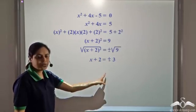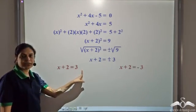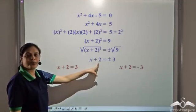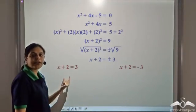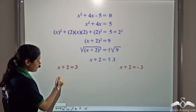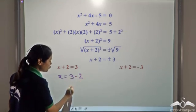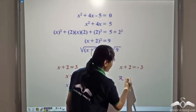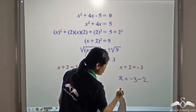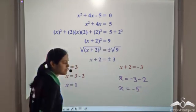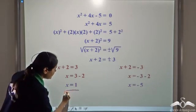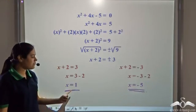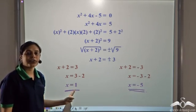We get two equations from here: x plus 2 equal to positive 3, and x plus 2 equal to negative 3. Solving the first gives x equal to 3 minus 2, that is x equal to 1. Solving the second gives x equal to negative 3 minus 2, that is x equal to negative 5. So x equal to 1 and x equal to negative 5 are the solutions, derived by the method of completing the square.